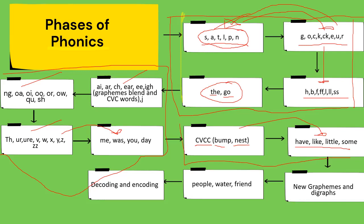Then, phase 4, reading new graphemes and digraphs. Then, insert level 4 of sight words like people, water, friend. Then, phase 5, decoding and encoding. Ito yung nakakabasa na siya ng high-frequency words at nakakapag-spell na din siya or write words like yung mga words with prefixes and suffixes.